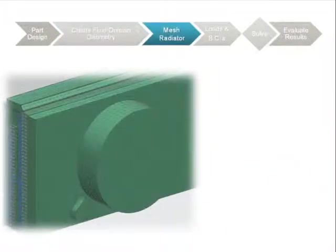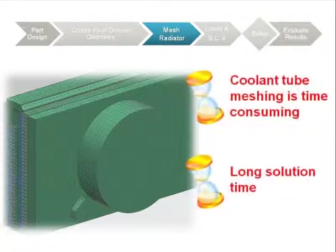Another challenge engineers have is with creating a mesh to represent the coolant tubes in the radiator. With typical CFD tools, analysts model the coolant tubes by manually building a hexahedral FE mesh for each tube. This process is extremely tedious and time-consuming since there can be as many as 50 tubes or more in a radiator.